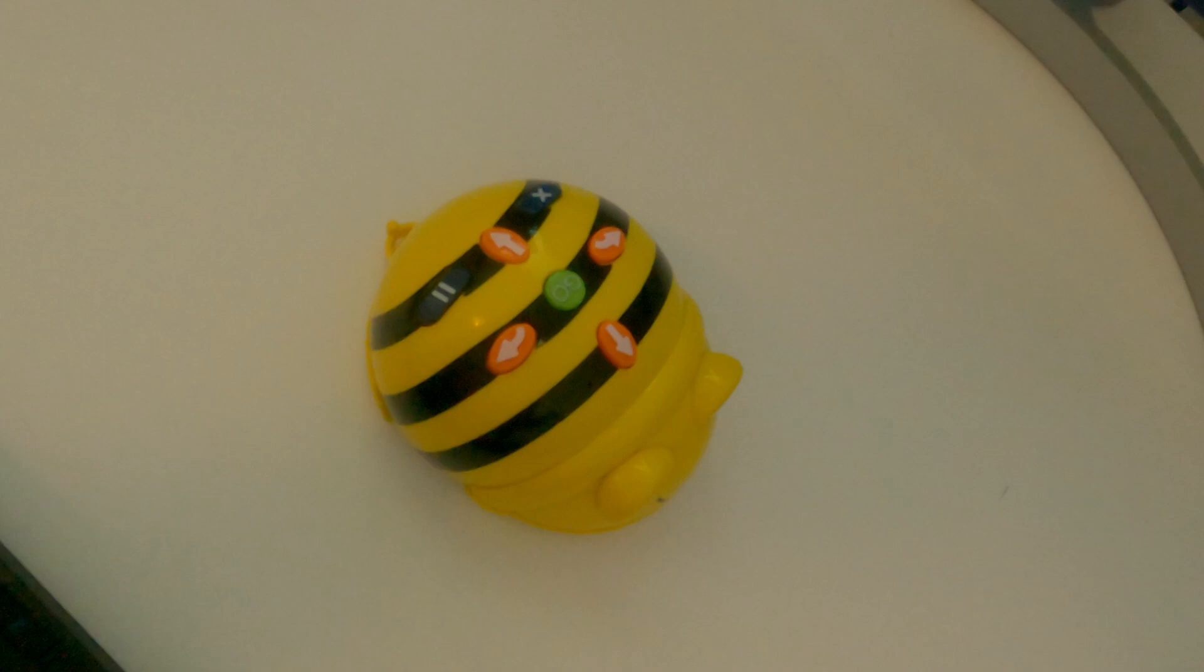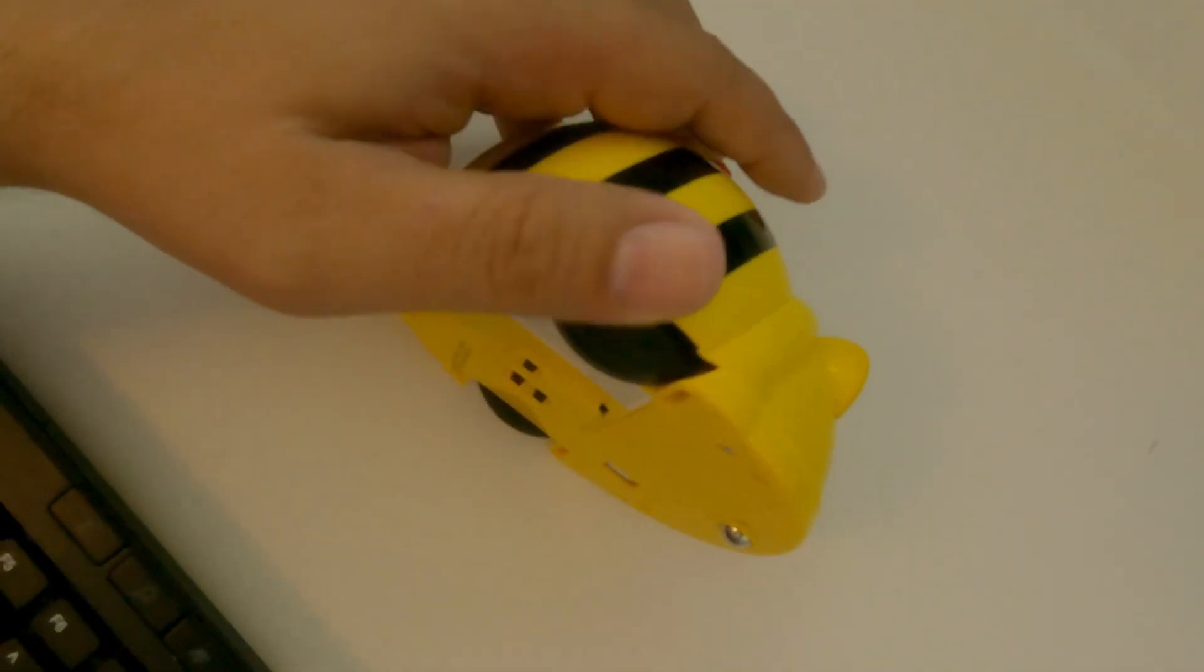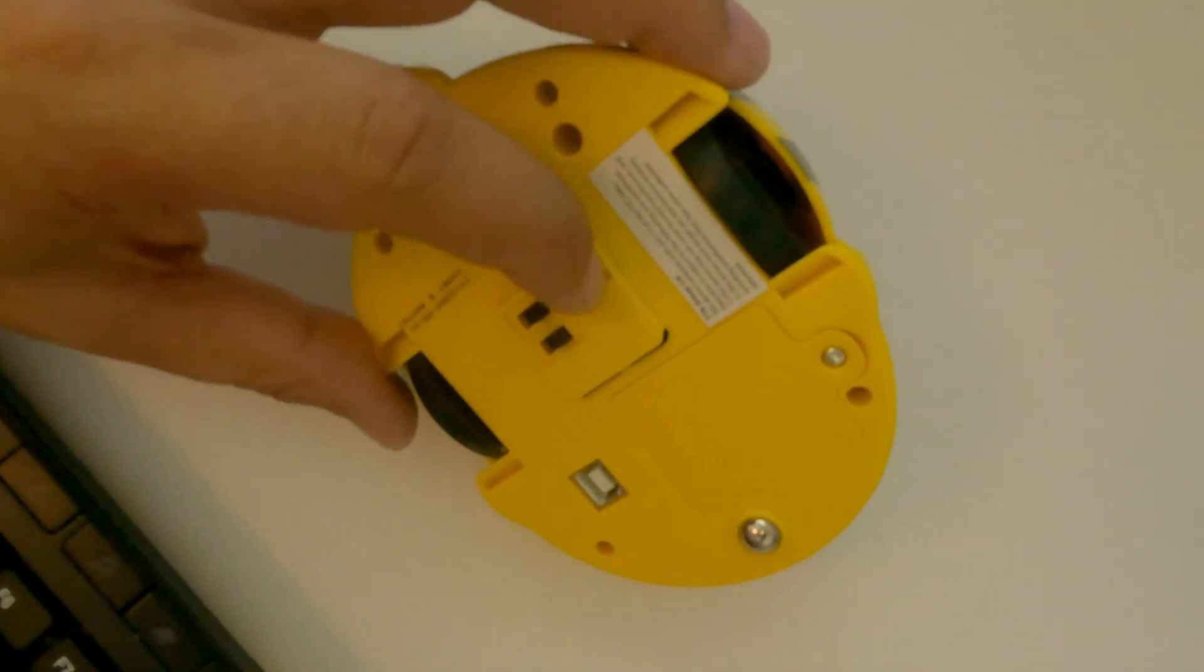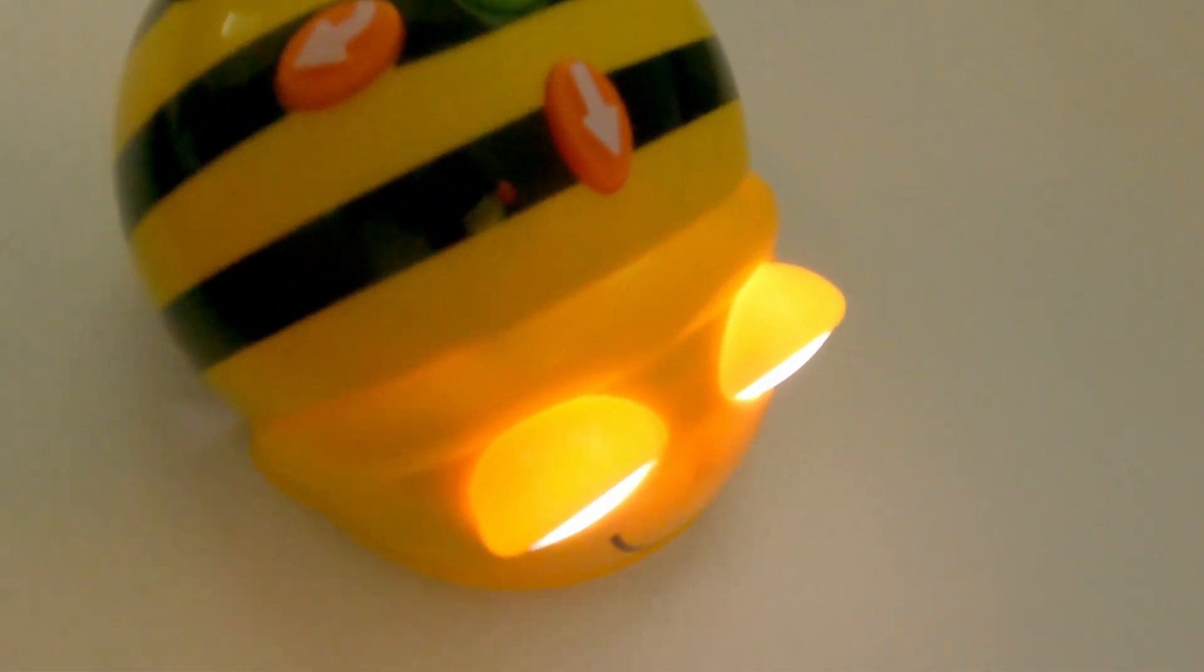The first thing that we're going to do is turn our B-Bot on. In order to do that, we will flip it upside down and there are a few switches here. Here we go, turning it upside down, and now you'll see the lights on the front light up.